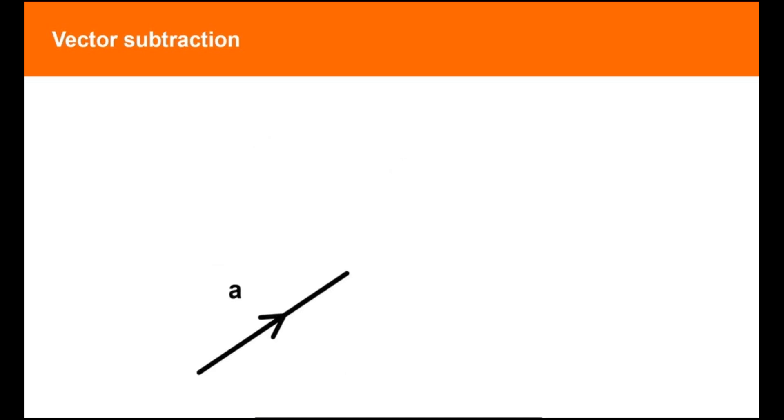You can see that the resultant vector a minus b can be considered either as a minus b or as minus b plus a.